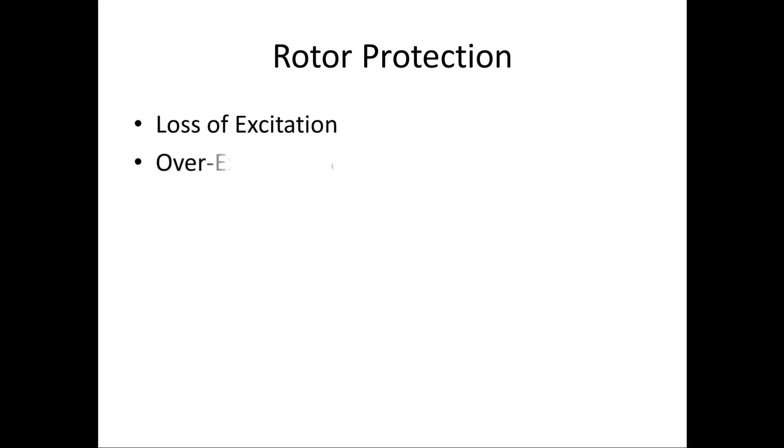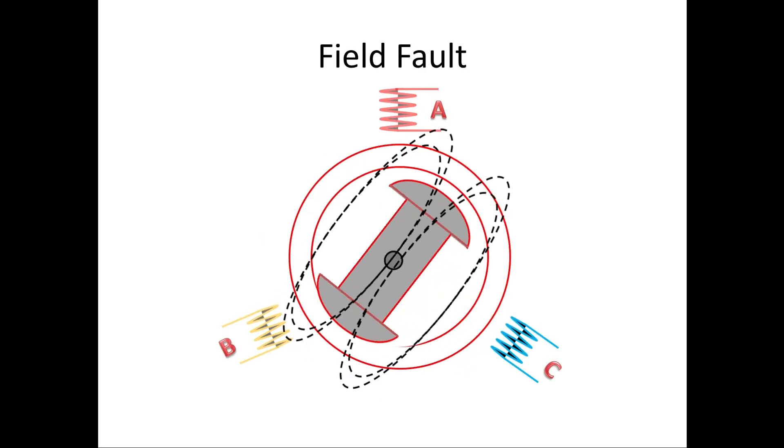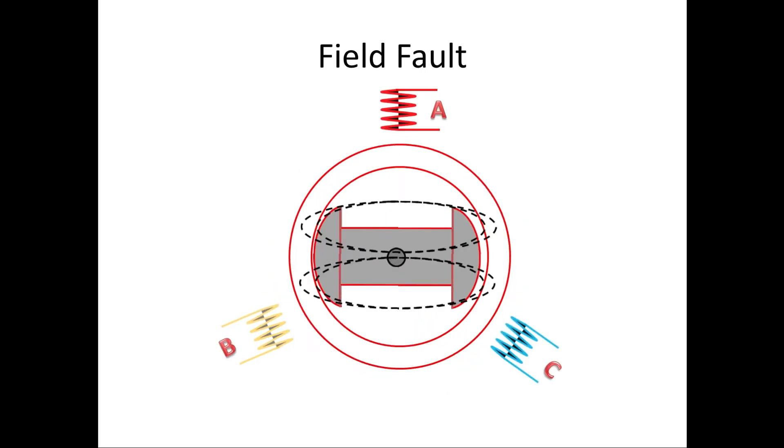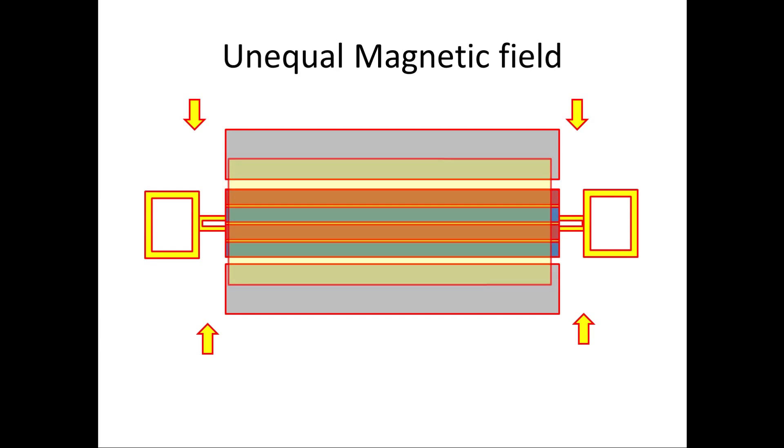For Rotor we have many protections. We are going to see earth fault protection. When we see the effect of earth fault on the rotor, first it reduces the magnetic flux on rotor, which affects the output of Stator. Second it makes magnetic imbalance on rotor, which leads to vibration and bearing failure due to the force imbalance on rotor.